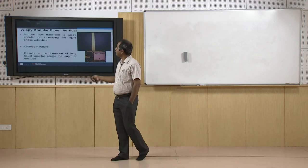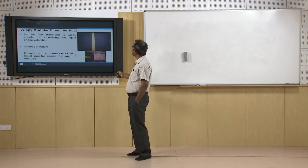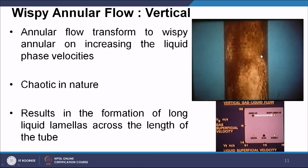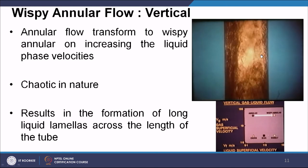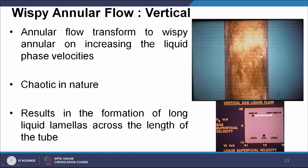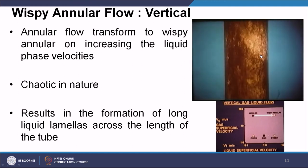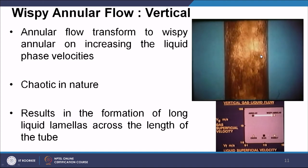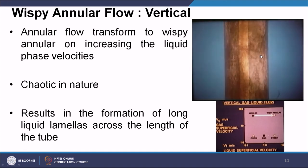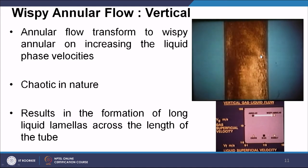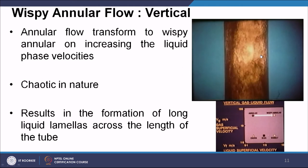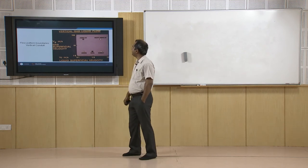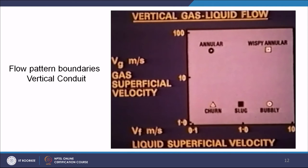Wispy annular flow can be observed as a transformation from annular flow by increasing the liquid phase velocities. It is very chaotic in nature, and results from high gas superficial velocity combined with high liquid superficial velocities. The complete set of flow patterns for vertical gas-liquid two-phase flow thus includes: bubbly, slug, churn, annular, and wispy annular.